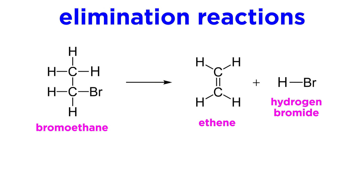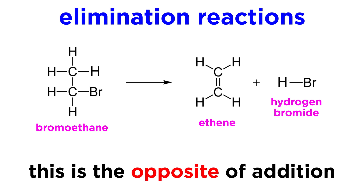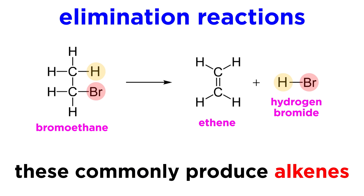Next we have elimination reactions. These are sort of like the opposite of addition reactions. Here we have a proton and some leaving group being eliminated from two adjacent carbons, and a pi bond will form in their place. So we can take the previous addition reaction and simply reverse it. The hydrogen and bromine will leave to form hydrogen bromide, and there is now a pi bond in between the two carbons that saw groups leave. Alkenes are therefore commonly the product of elimination reactions.